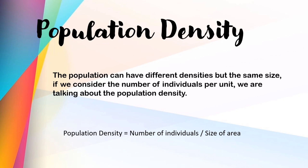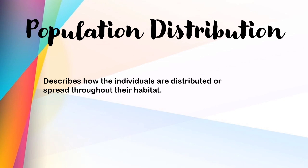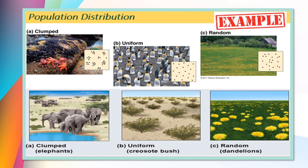Now let's talk about population density. A population can have different densities but the same size. If we consider the number of individuals per unit area, we are talking about population density. To get the population density, we need to divide the number of individuals by the size of an area. Next is population distribution, which describes how individuals are distributed or spread throughout their habitat. Most of the time, individuals in a population are not spread out evenly and sometimes live in different patterns like clumps, dispersed, or evenly distributed. The pattern may reflect the characteristics of the species or its environment.